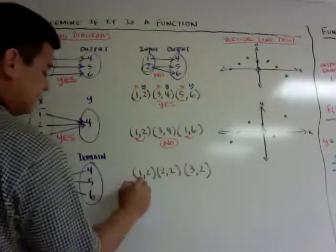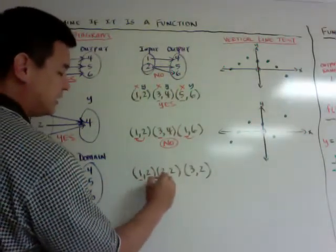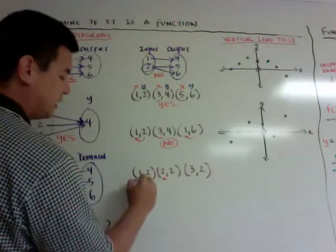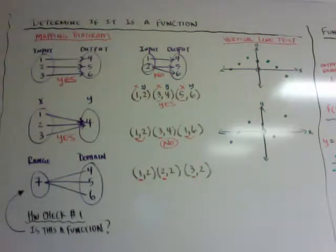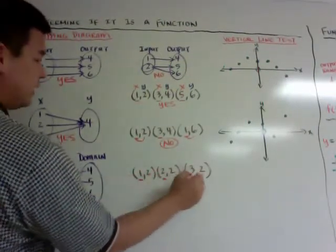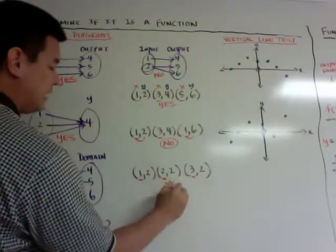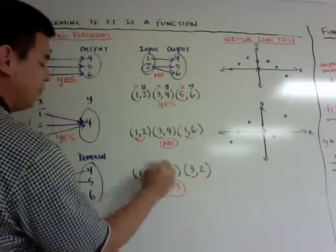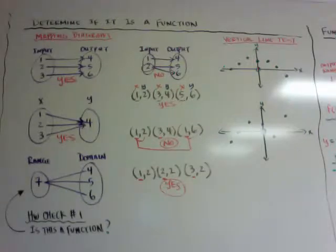A shortcut: just look at the x-coordinates. If all of your x-coordinates are different — such as 1, 2, 3 or 1, 3, 5 — your answer is automatically yes, it's a function. But if you have two of the same x's with two different y's, your answer is going to be no.